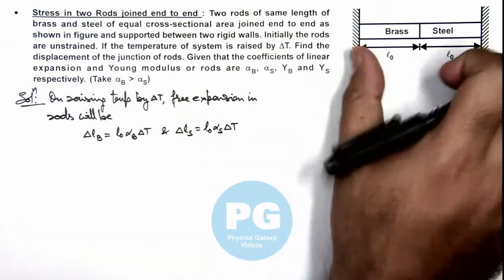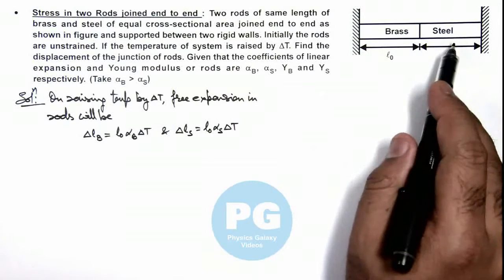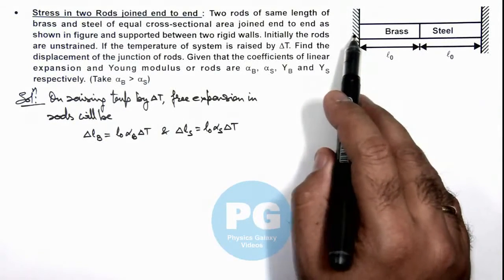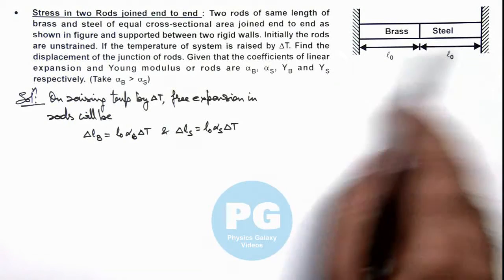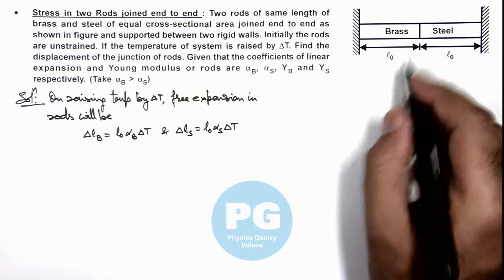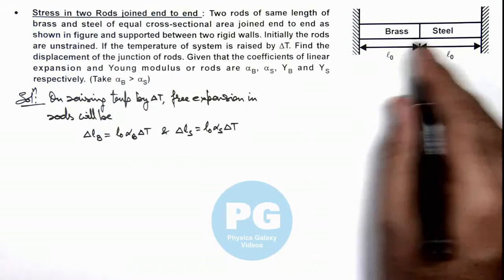But here in the given situation, as the rods are rigidly attached to the two walls of which the separation remains constant, then obviously as brass will expand more, the junction will be displaced.